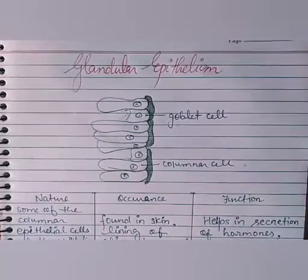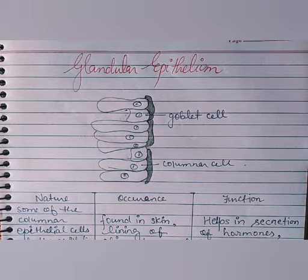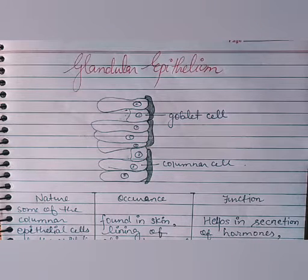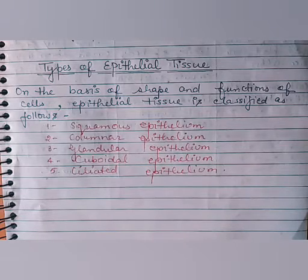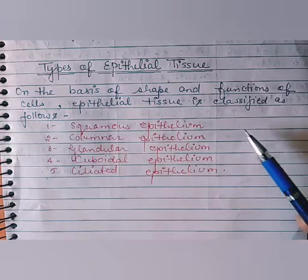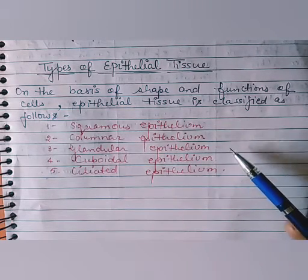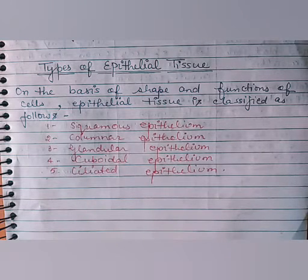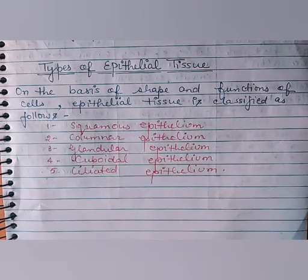So, glandular epithelium helps in the secretion of hormones, sweat, saliva, and various kinds of secretory materials in the body. We have discussed the types of epithelial tissue: squamous, columnar, glandular, cuboidal, and ciliated. That's all for this video. In the next video, we will discuss another kind of animal tissue — muscular tissue. Thank you.